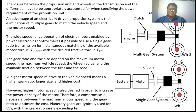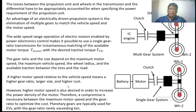The gear ratio and its size depend on the maximum motor speed, maximum vehicle speed, wheel radius, and available traction between the tires and the road. If the motor speed is higher but the wheel speed is very low, a high gear ratio is required, which is also costly. A high motor speed is desired to increase the power density of the motor. Therefore, a compromise is necessary between maximum motor speed and gear ratio to optimize cost. Planetary gears are typically used for EVs.